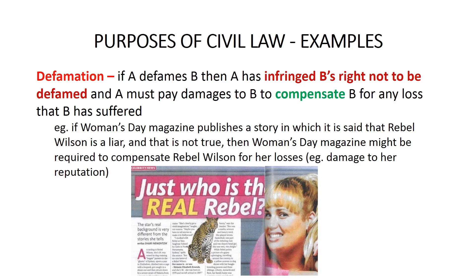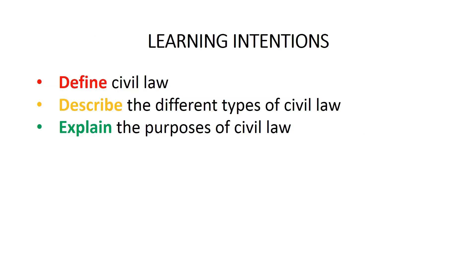You can now include in your summary books a summary of the three purposes of civil law, together with an example of how a type of civil law can achieve these purposes. That brings us to the end of this video. As a result of watching this video and taking notes, you should now be able to: first, define civil law; second, describe the different types of civil law; and third, explain the purposes of civil law. Read the pages from the textbook referred to on the first slide, and if you find any additional useful information, supplement your Cornell notes with it.